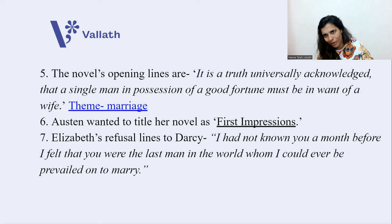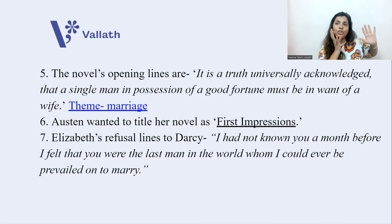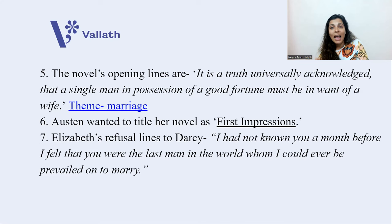The novel's very famous opening lines are: 'It is a truth universally acknowledged that a single man in possession of a good fortune must be in want of a wife.' Here the theme is marriage. But more than the man wanting a wife, it is the neighbors who want to give their daughters to this wealthy person. Austen originally wanted to title her novel First Impressions and even wrote the manuscript with that name, but it was later changed to Pride and Prejudice.